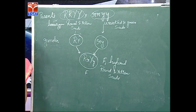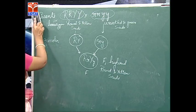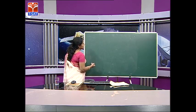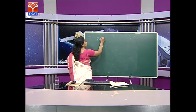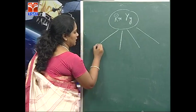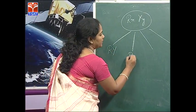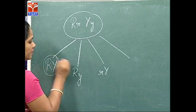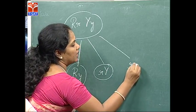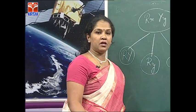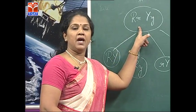When they are crossed, the F1 hybrid is capital R small r, capital Y small y — having round seeds and yellow seeds but it is heterozygous. The four possible gametic combinations from the F1 hybrid are: capital R capital Y, capital R small y, small r capital Y, and small r small y. This is what the law of independent assortment states — dominant and recessive alleles independently pair with alleles of the other gene.